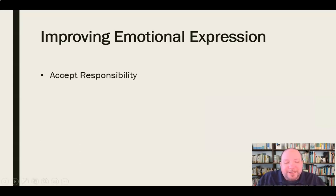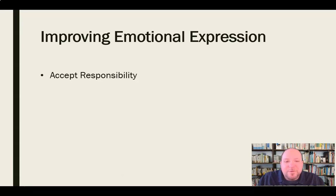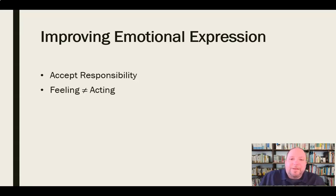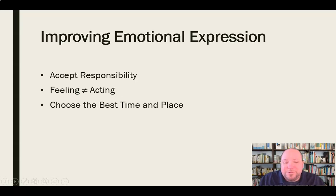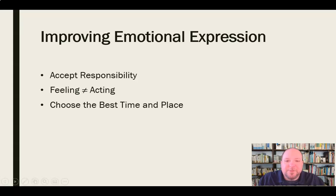We can also accept responsibility — when we make a mistake, we say that was me. We need to accept that nobody else can really tell us what emotion we should experience; they can nudge us, but in the end we are responsible for our own emotions. There's also a difference between feeling and acting. We can feel something without having to act upon it immediately. We can choose the best time and place for this emotion to be expressed with others — now may not be the best time, so we can make a concerted effort to choose the best time and place for each individual conversation.